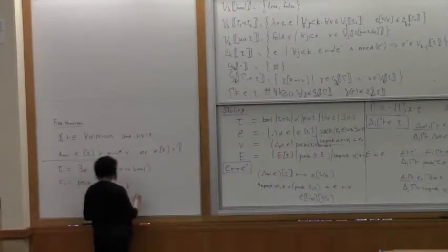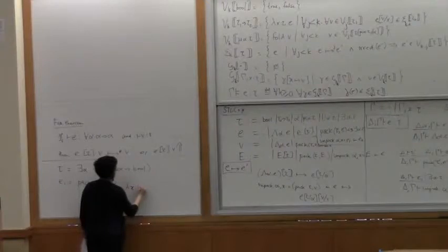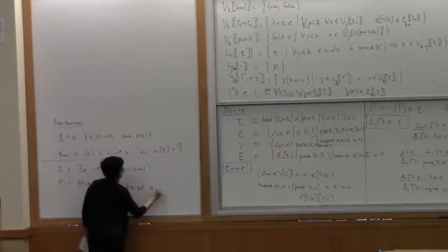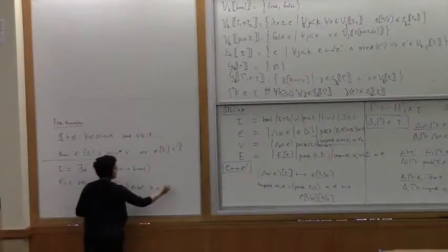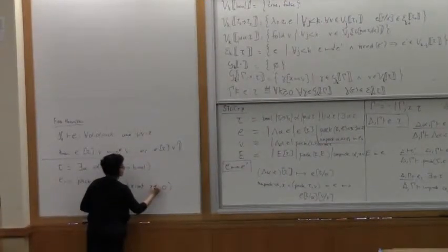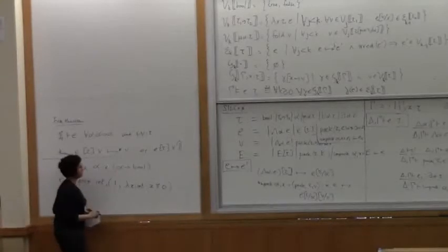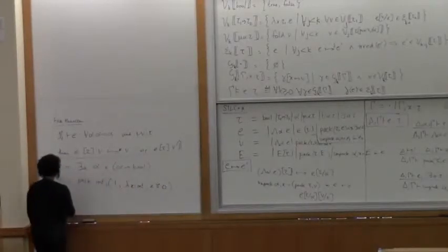And now I need to put a function from int to bool. So I'll use x int. Let's say x equals zero, where equals here means integer equality.